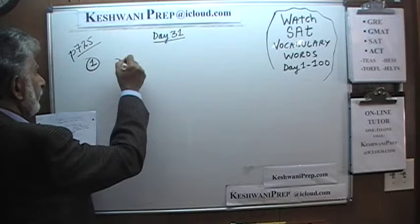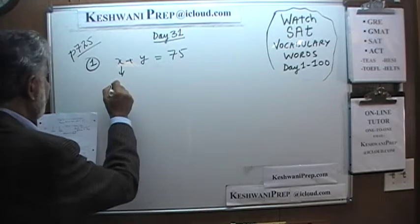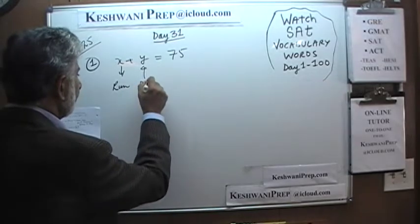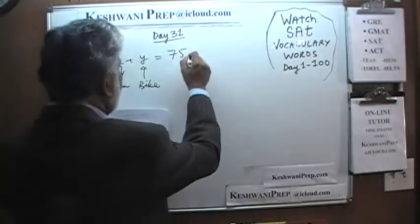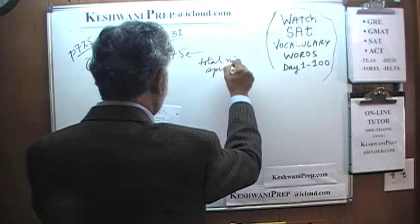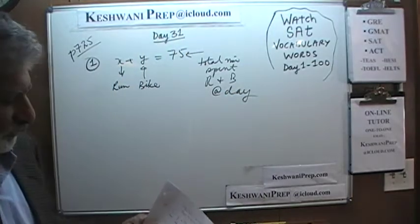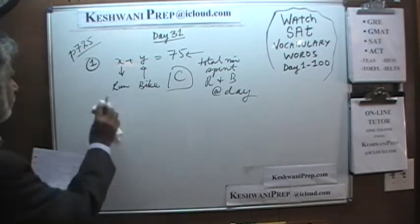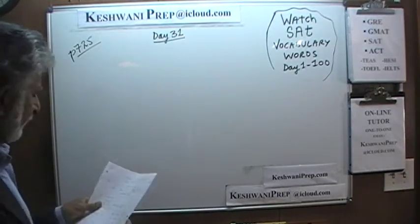Here we are told that x plus y equals 75. x is the number of minutes the person spends every day running, and y is the number of minutes the person spends biking. The question simply is: what does 75 represent? Obviously, 75 represents the total minutes spent running and biking each day. There is nothing to it. The answer is C.